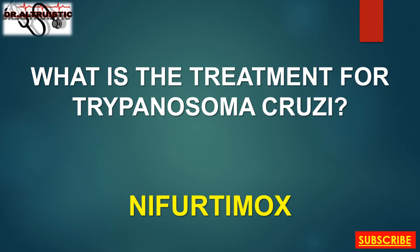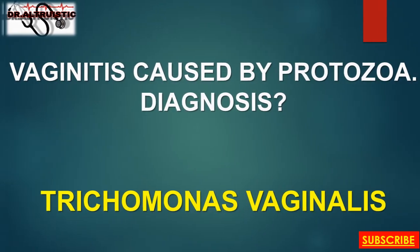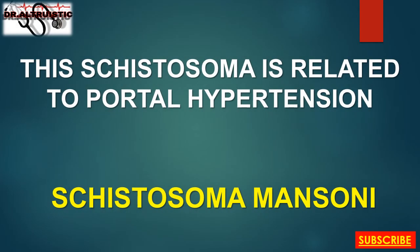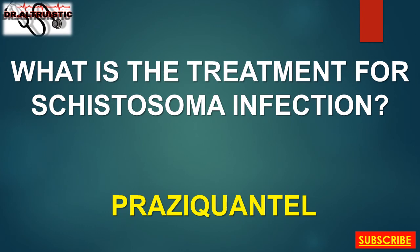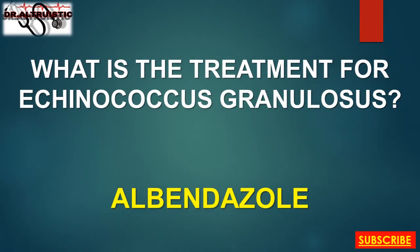What is the treatment for Trypanosoma cruzi? Nifurtimox. This organism can cause brain abscess in HIV patients: Toxoplasma. Vaginitis caused by protozoa diagnosis: Trichomonas vaginalis. This Schistosoma is related to portal hypertension: Schistosoma mansoni. What is the treatment for Schistosoma infection? Praziquantel. What is the treatment for Echinococcus granulosus? Albendazole.